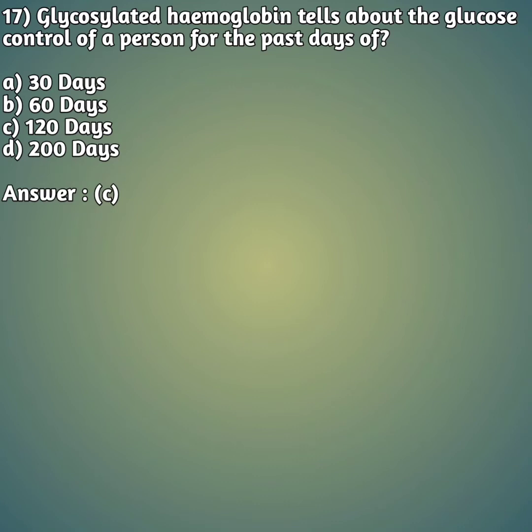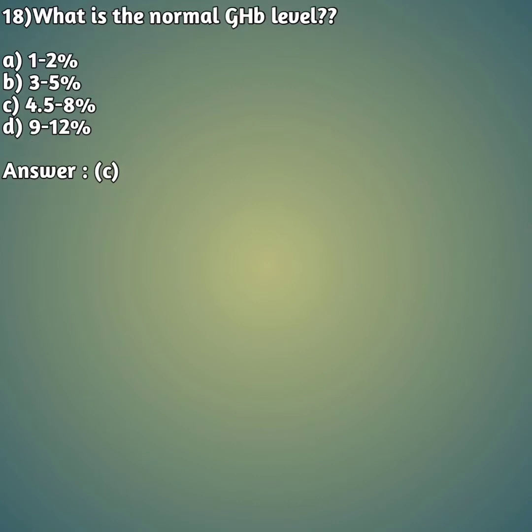Question 18: What is the normal GHB level? Option A: 1 to 2%, option B: 3 to 5%, option C: 4.5 to 8%, option D: 9 to 12%. GHB level is the glycosylated hemoglobin level. The right answer is option C, 4.5 to 8%.